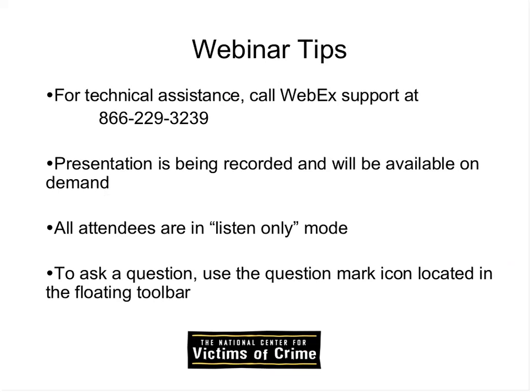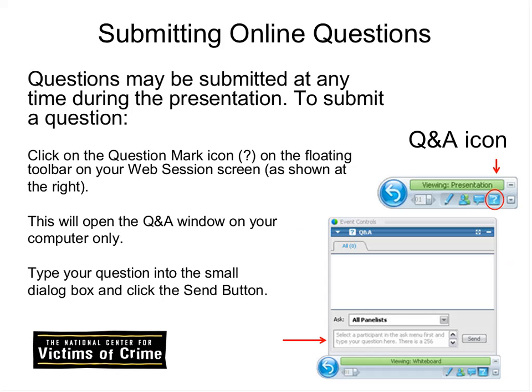The Q&A tool may show up as a panel on the right side of your screen, or as a floating toolbar with a question mark icon. Click on it and it opens the question-and-answer panel. Type a question in the small box at the bottom and hit send. Those questions are only seen by the panelists and the host, not by other attendees. We'll do our best to answer questions at the end, and will follow up by email if we don't get to yours.